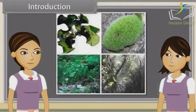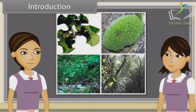Land plants are further divided into the following divisions: Thallophyta, Bryophyta, and Tracheophyta.